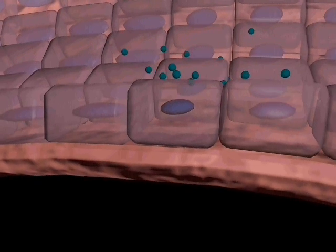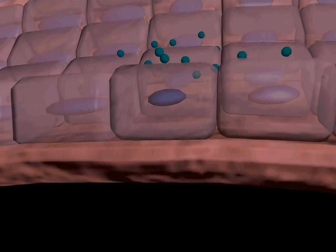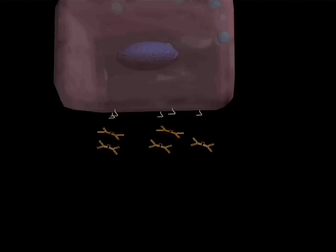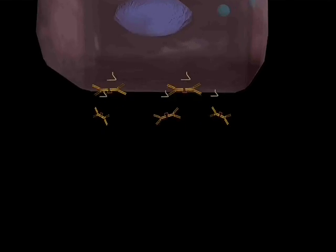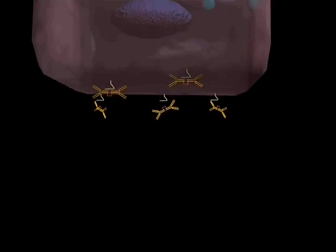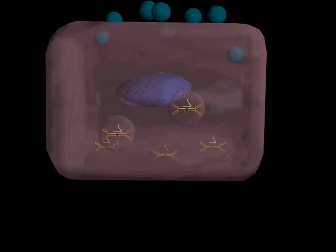Immunoglobulin A is produced by B cells, which may be transported across the epithelium from the abluminal to the luminal surface. To do this, it first becomes bound to the poly-IG receptor on the abluminal surface of the epithelial cell.